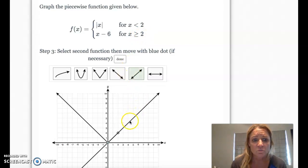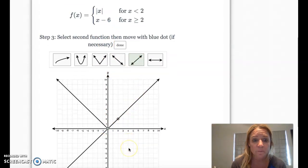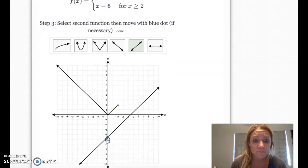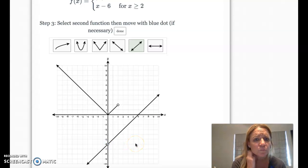So we need to move it down to negative 6. Let's see if it'll slide for us. Yep. So it slides down to negative 6. Move the blue dot if necessary, then click done.